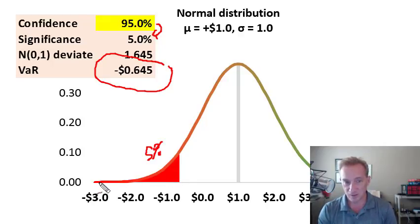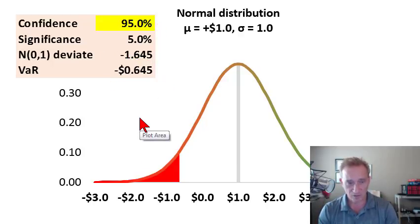It's the worst expected loss with some level of confidence. It's not 100% because this normal is asymptotic. It could be way out here. But with 95% confidence tomorrow, we expect the loss not to exceed this quantile of -65 cents.